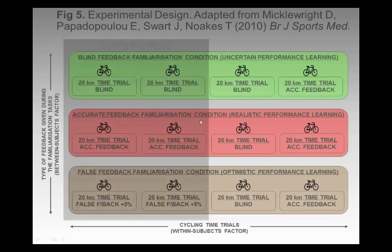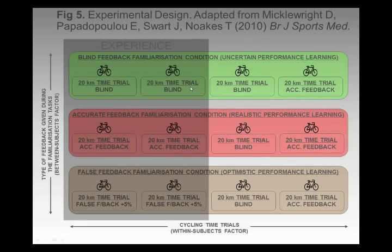In the blind time trial, we didn't give them any information at all — they simply had to cycle for 20 kilometres, best they possibly could, with no performance feedback information. In the accurate condition, they just had a normal calibrated cycling computer. And in the false feedback condition, we messed around with the cycle computer to make them think they were going 5% faster than they actually were. In the third time trial, we completely blinded all subjects, and in the final time trial we made them all have accurate feedback.